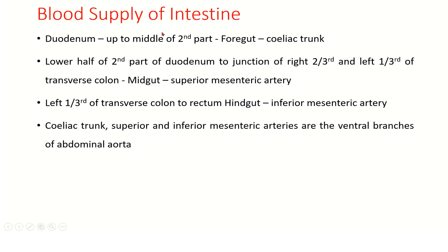In the blood supply of the intestine, the duodenum up to the middle of the second part is developed from the foregut, so it is supplied by branches of the celiac trunk. The lower half of the second part of the duodenum to the junction of the right two-thirds and left one-third of the transverse colon is developed from the midgut, supplied by the superior mesenteric artery. The left one-third of the transverse colon to the rectum and anal canal is hindgut, supplied by the inferior mesenteric artery.